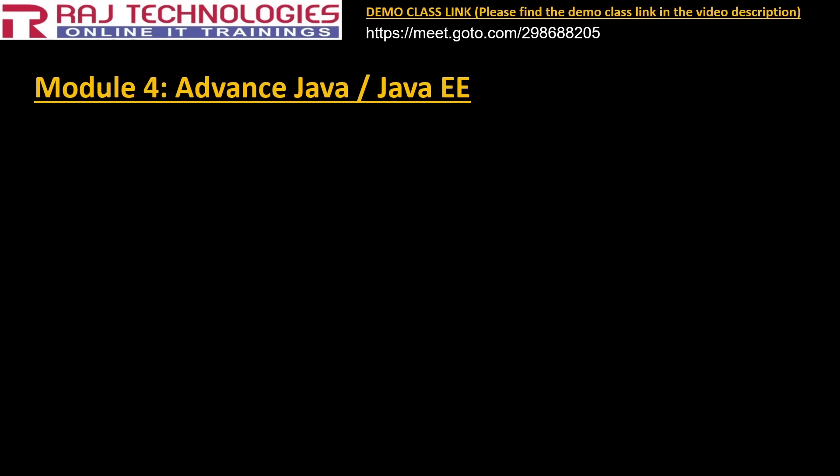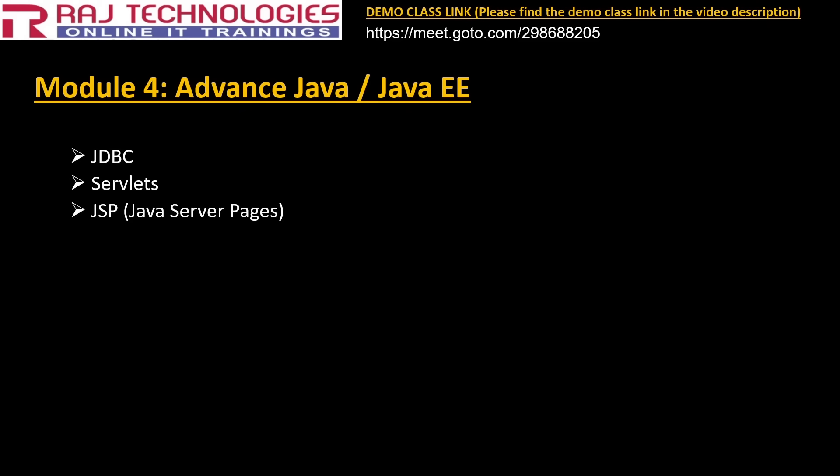Module 4: advanced Java — also called Java EE, that is Enterprise Edition — whose main use is to develop web applications. We will be learning JDBC, Servlets, and JSP, where JSP stands for Java Server Pages.